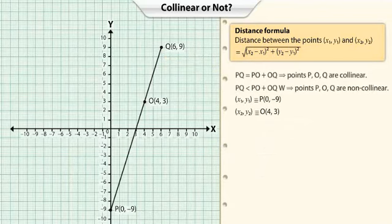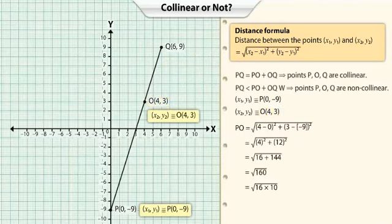Similarly, we find the distance between P(0, -9) and O(4, 3). We get this distance to be 4 times the square root of 10.